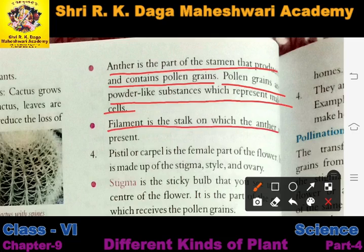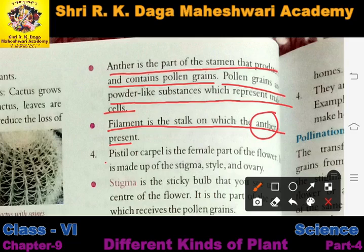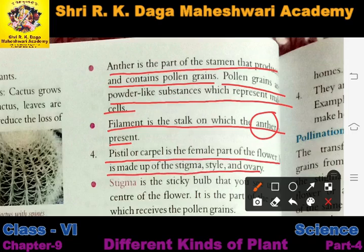Filament is the stalk on which the anther is present. Pistil and carpel is the female part of the flower. It is made up of stigma, style, and ovary. As we discussed, stigma, style, and ovary are the female parts of the flower.